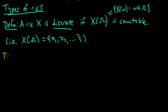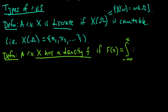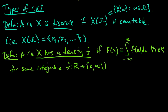So that's a discrete random variable. The other main type: a random variable X has a density f — so f is the density — if the CDF of X can be written as an integral from minus infinity to x of this function little f, for any real x, for some integrable little f. It has to be integrable, of course, for this to make sense. So it's just some non-negative function that can be integrated. That's a random variable with a density.